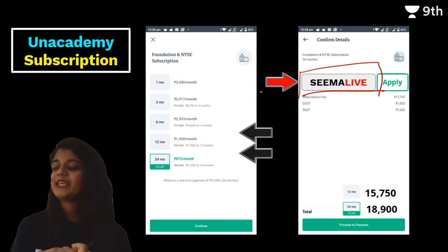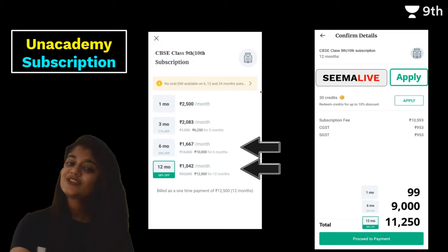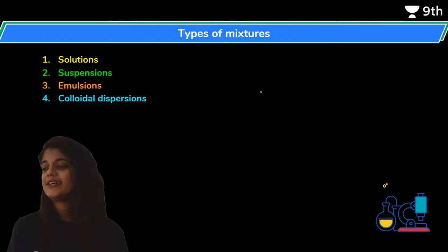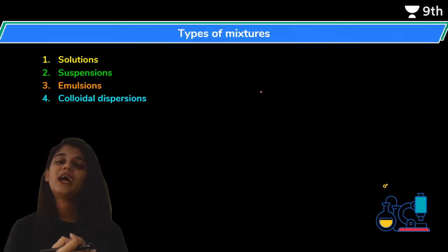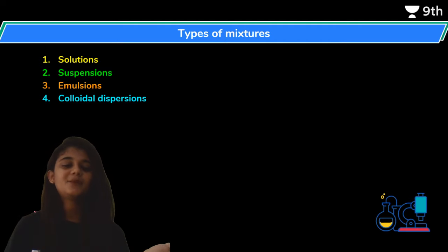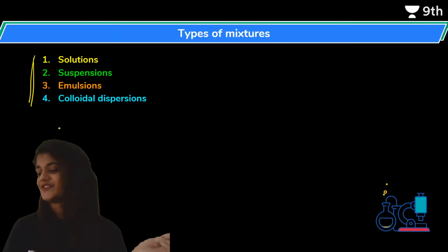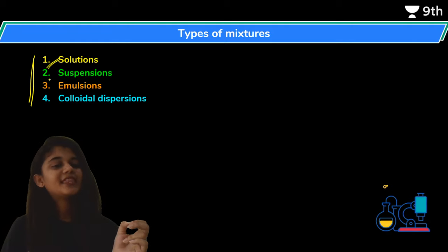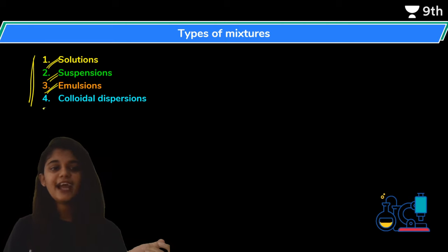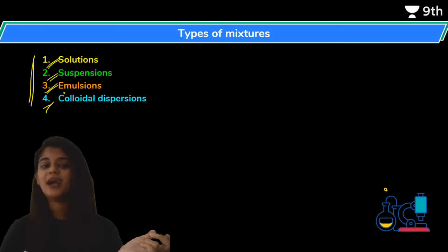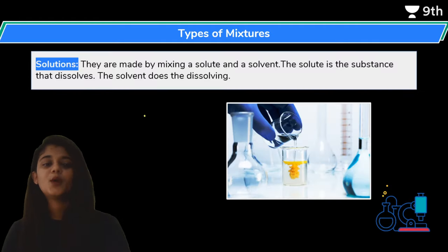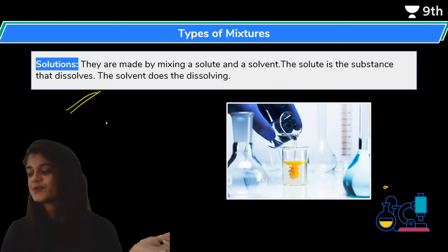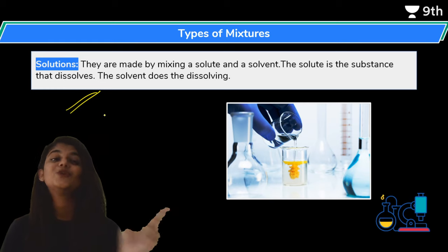Let's begin the session. I had stopped at mixture classification. One type of classification we saw was homogeneous mixture and heterogeneous mixture. Now I'm telling you there is another category as well. Mixtures are divided into four classifications: first is solution, next is suspension, third is emulsion, and fourth is colloidal particles. We'll see what these four categories are and what differences exist between them, one by one.